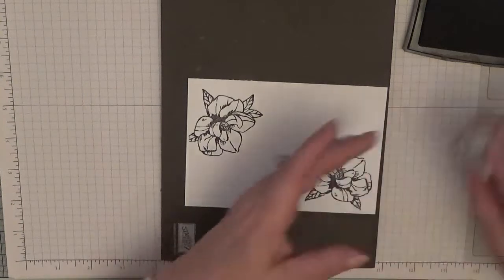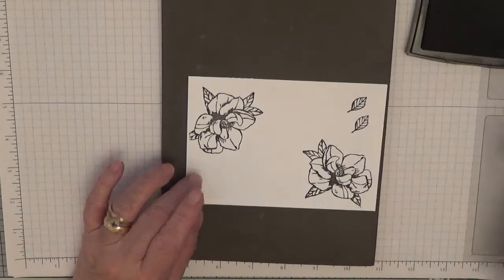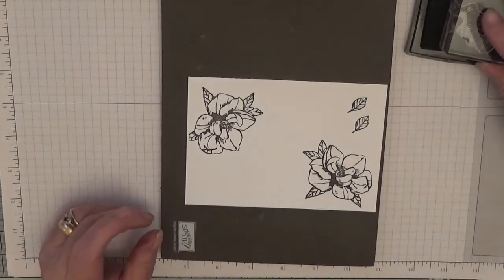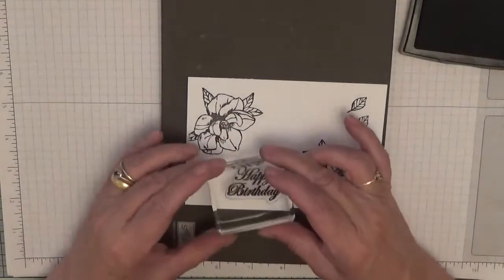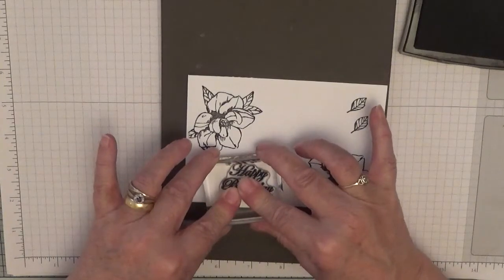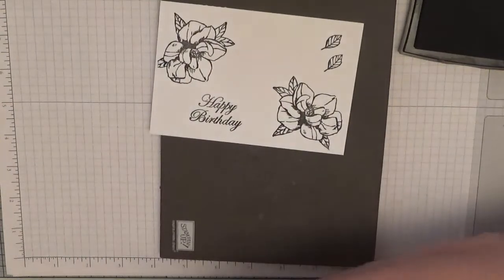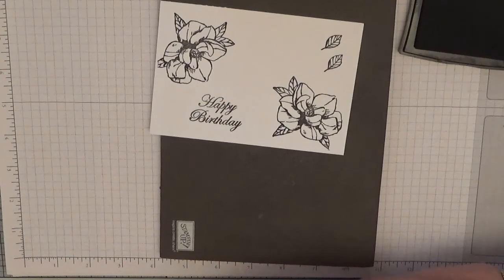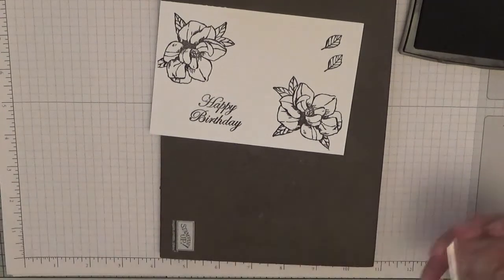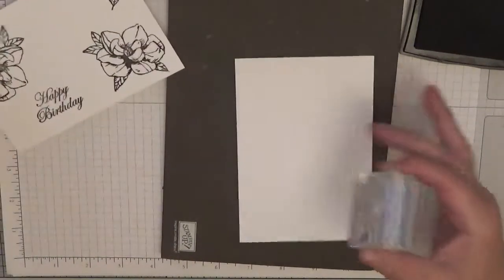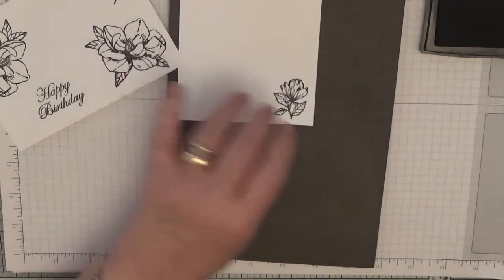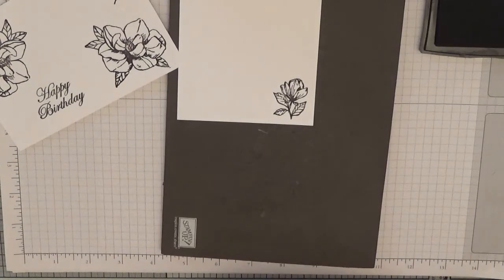Then we need two of these leaves. Clean it off and the happy birthday which I will stamp just there. And on the inside piece we will stamp our bud just down there and clean this stamp.